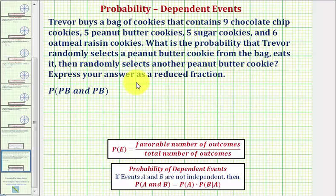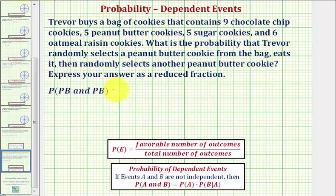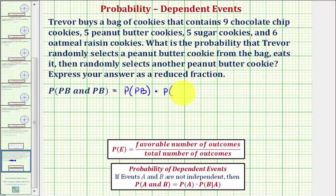We're asked to express the probability as a reduced fraction. Because the outcome of selecting a peanut butter cookie the first time affects the probability of selecting a peanut butter cookie the second time, we call these two events dependent. When we have two dependent events, the probability of them both occurring is equal to the probability of the first event occurring, times the probability of the second event given the first event has occurred. So we'll find these two probabilities, then find the product.